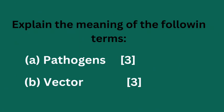Explain the meaning of the following terms. A. Pathogens, which is carrying three marks. B. Vectors, which is also carrying three marks. So let's see how we can answer these questions.